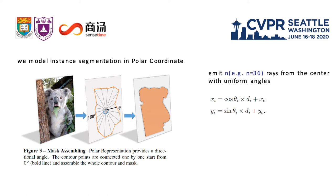During inference, the network outputs the classification and centerness scores. We multiply centerness with classification to obtain final confidence scores. Starting from angle zero, the contour control points are connected one by one, as shown in the image, and finally assembles a whole contour as well as the mask. We apply NMS to remove the redundant masks.